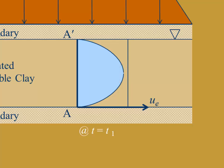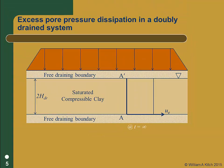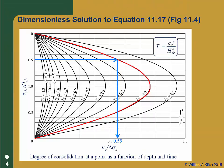At some later time T2, there will be additional dissipation of excess pore pressure, and our isochrone might look like this. The pore pressure continues to dissipate. Eventually, all the excess pore pressure will dissipate. Theoretically this takes an infinite amount of time, but from a practical standpoint it is finite. So the isochrones in our dimensionless solutions represent the actual dissipation of excess pore pressure in the field.